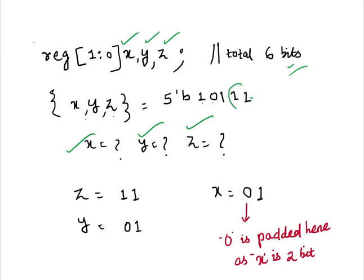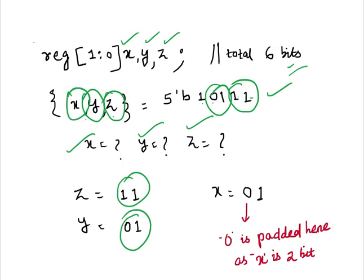Again same thing. Z first will be LSB we will get first. So here z will get LSB data, so z will be 11. Then y will get 01. Then x. See, total is 6 bits here: x, y, and z, we will get each 2 bits. But here the assigned one is 5 bits. So the last bit, for x we will get this one, but for MSB we will get 0. So 0 will be padded here, because x is 2 bits but here we have assigned 1 bit only to x.